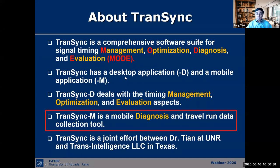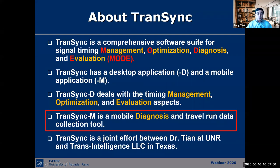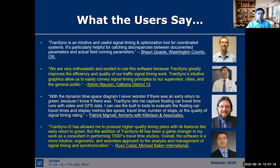Transync has a desktop application and a mobile application, each doing different things. Transync D handles the management and optimization side, while Transync M is more for field diagnosis and travel time data collection. Transync D is a joint effort between myself at UNR and Transync Intelligence LLC in Texas. I personally am not a programmer.